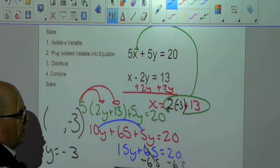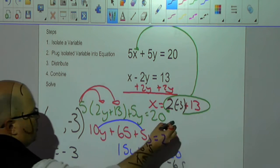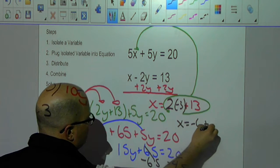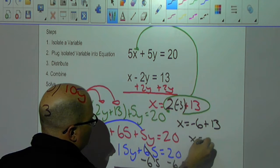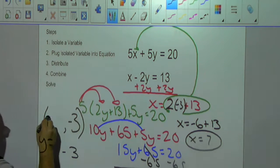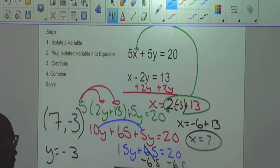So, it's going to be negative 6 plus 13. x equals negative 6 plus 13 or x equals 7. And I'm going to plug my 7 here and that is my answer.